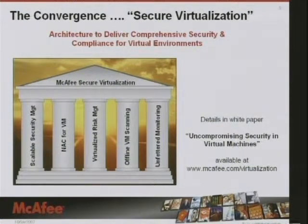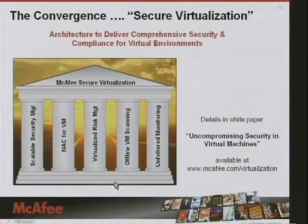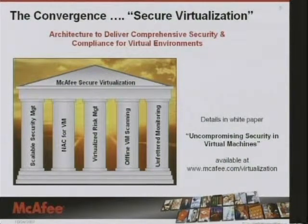In the order that I'll touch on it — NAC for VM, or network access control, the network admission control for virtual machines. A second pillar is offline VM scanning. The third one is unfettered monitoring. Then virtualized risk management, and then scalable security management. Each of these is a bucket, a category, a grouping of functions essential to enterprise deployment of security systems that are greatly enhanced, or that can be and will be greatly enhanced through the use of virtualization concepts.